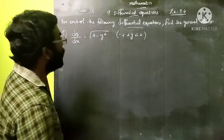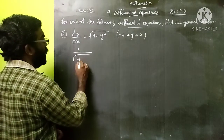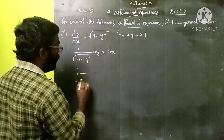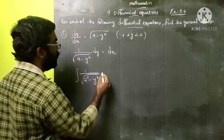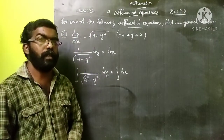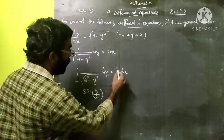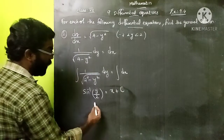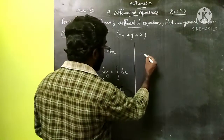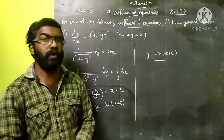Next: dy/dx = √(4 - y²), where -2 < y < 2. We write 1/√(4 - y²) dy = dx. Now the variables are separated; we can integrate. Integral of 1/√(4 - y²) dy — here 4 can be written as 2² — so integral of 1/√(2² - y²) dy = integral dx. Using the formula integral 1/√(a² - x²) = sin⁻¹(x/a), we get sin⁻¹(y/2) = x + c. So y/2 = sin(x + c), and y = 2sin(x + c) is the general solution.